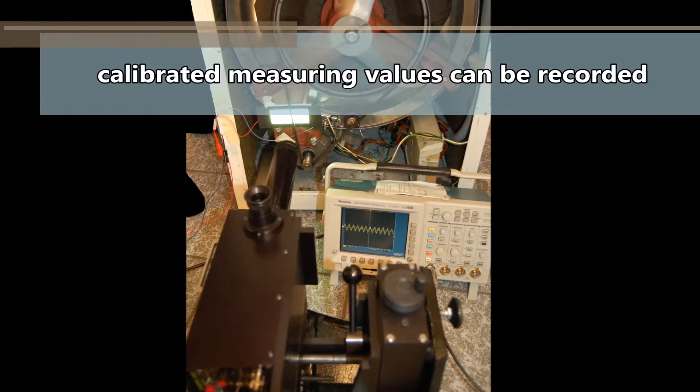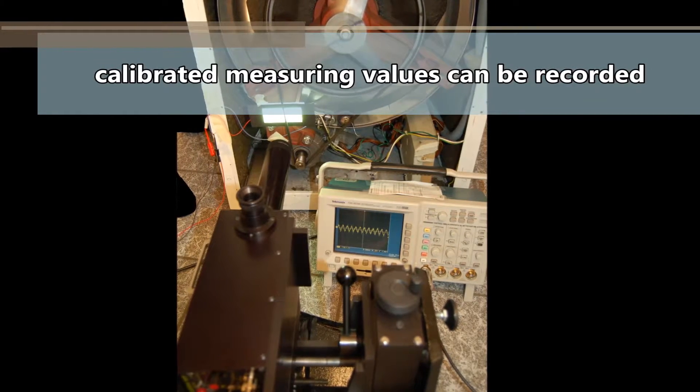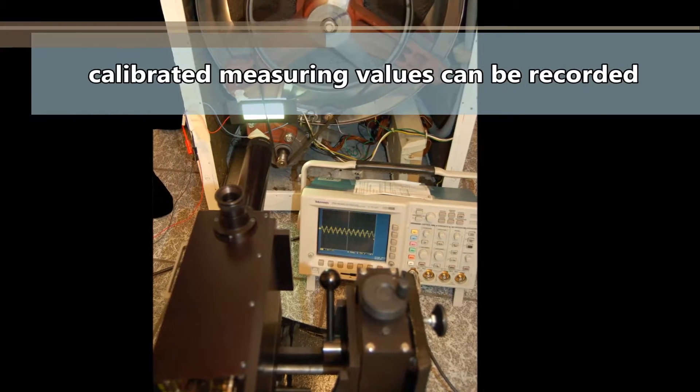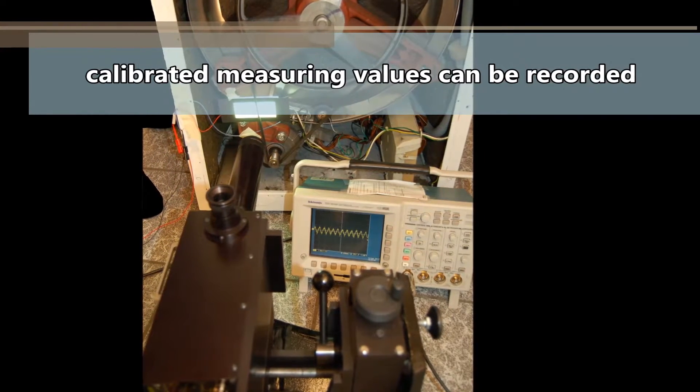Now the analog output signals of the measuring values are available. They are calibrated and can be recorded, for example, with an oscilloscope or PC.